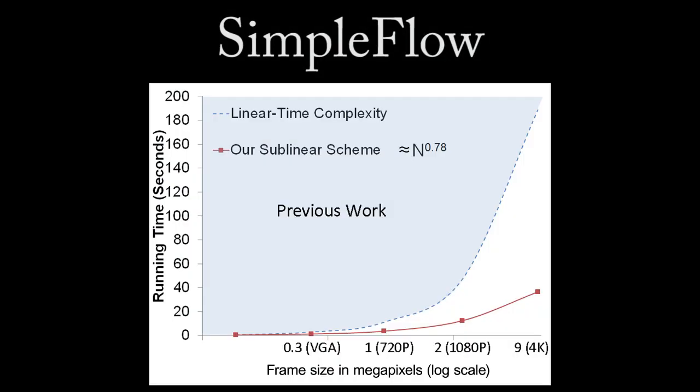Simple Flow has a unique characteristic: it is sublinear relative to the number of pixels in the frame. This means that as we feed in more pixels, we won't have large jumps in computational time, making it ideal for video editing.